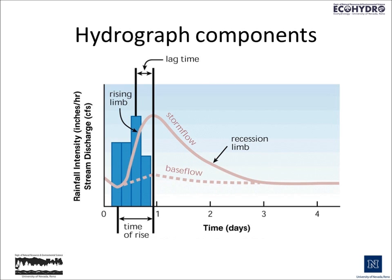Important elements of the hydrograph include the rising limb, which represents the time from when precipitation begins — shown as bars on the left-hand side of the graph — to the peak flow time. There is a time of rise associated with the rising limb that gives a sense of how quickly the stream system responds to precipitation inputs. There is also a lag time from the center of mass of precipitation to the peak of storm flow, and then following the storm, the recession limb, where stream flow returns to a level close to what it was prior to the precipitation event.